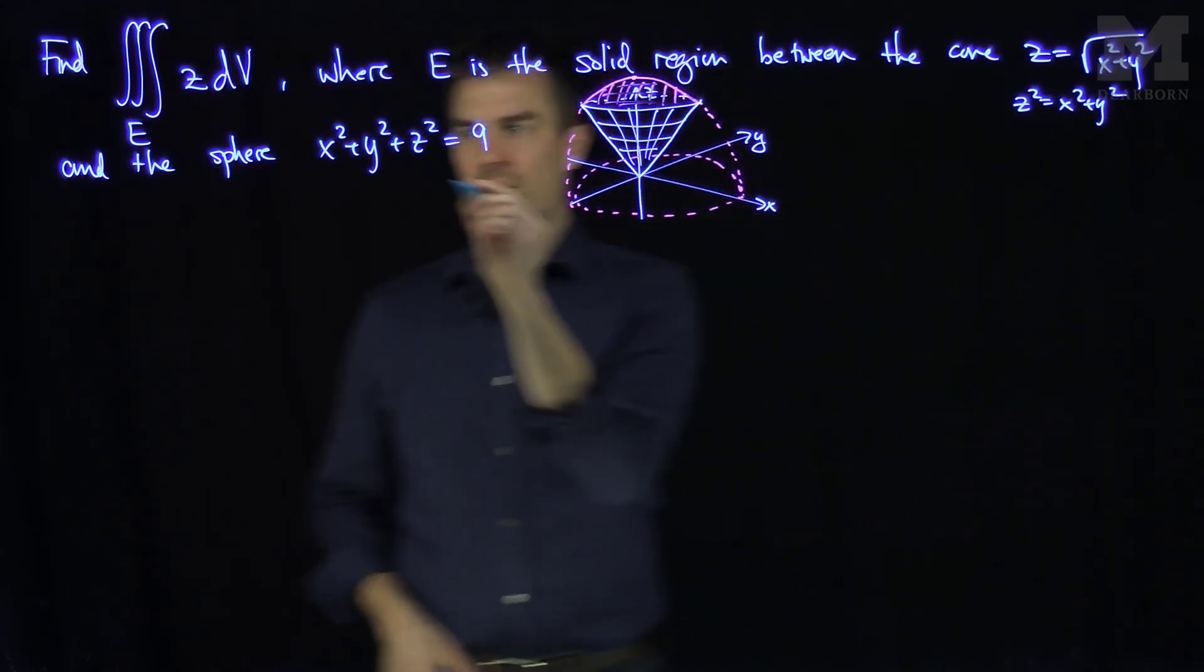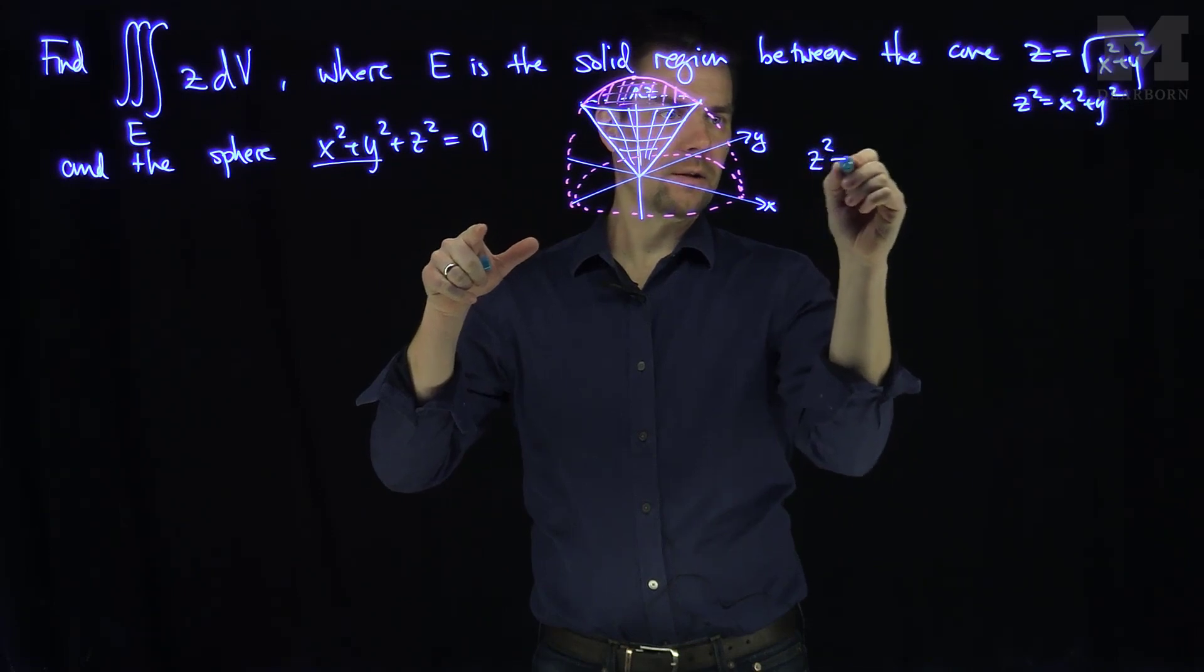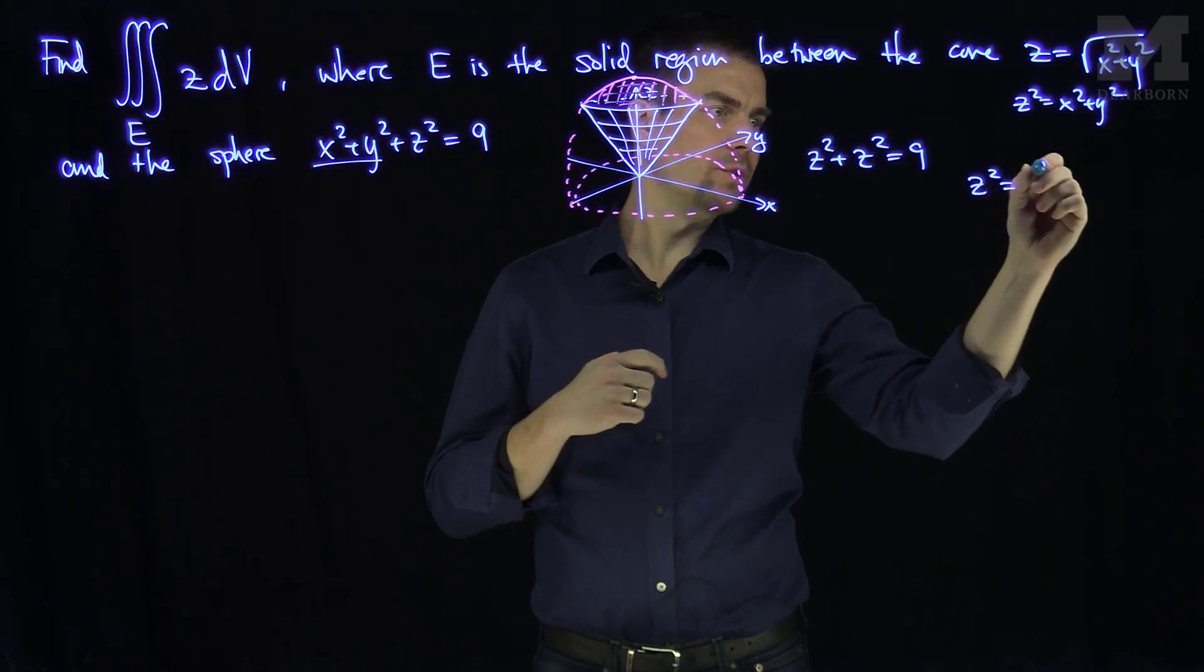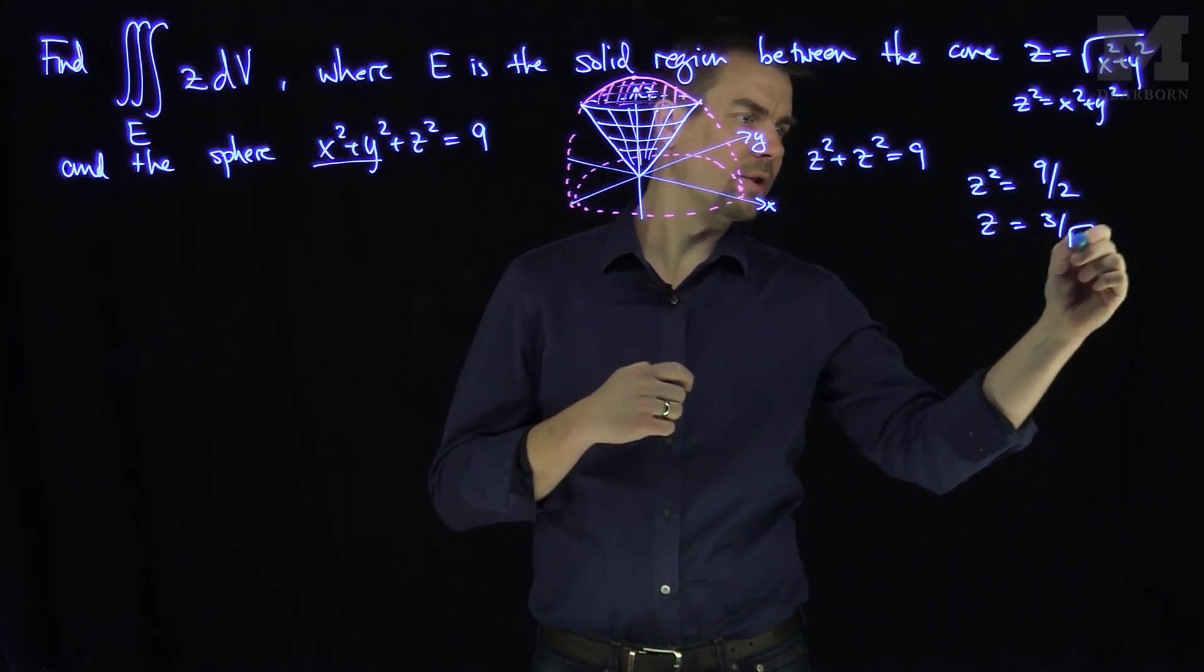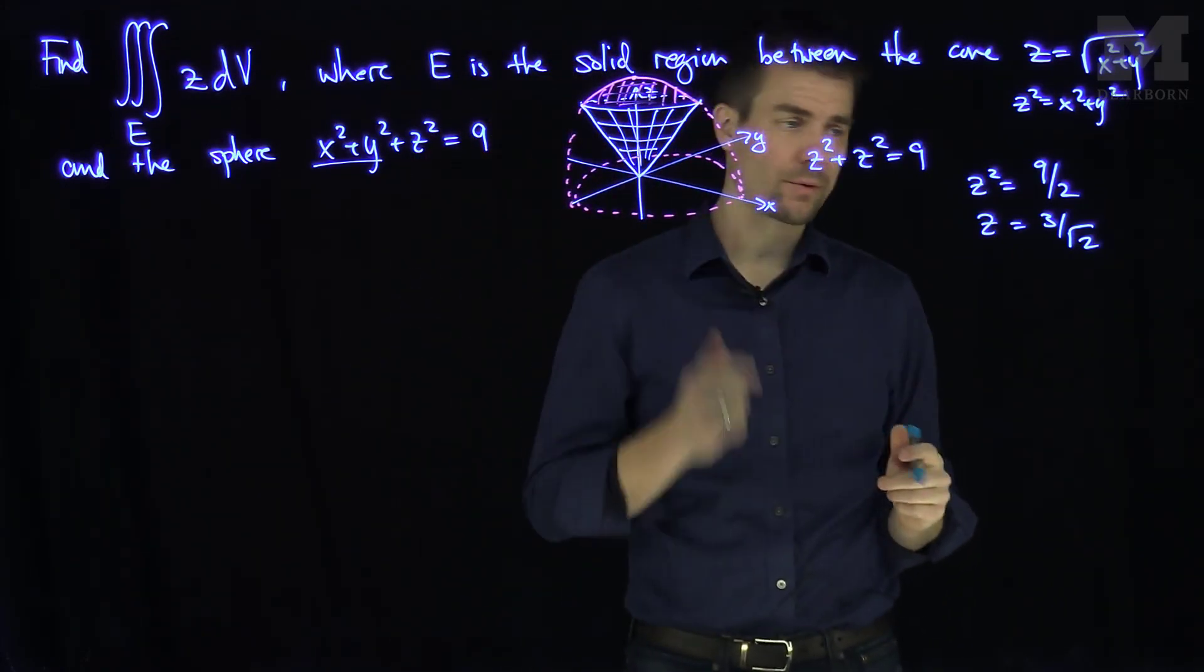So, this equation over here would become X squared plus Y squared turns into a Z squared plus another Z squared is equal to 9. So that would say that Z squared is equal to 9 over 2, or Z is equal to 3 over the square root of 2. Plus or minus, but we know that Z is non-negative in this region.